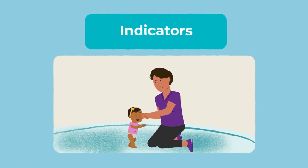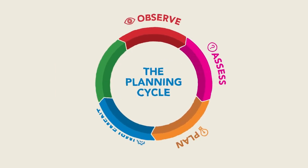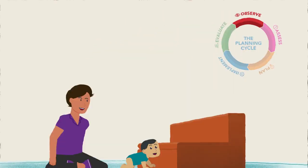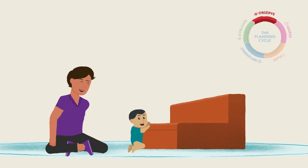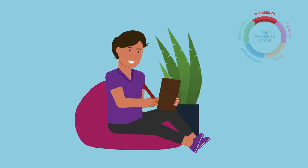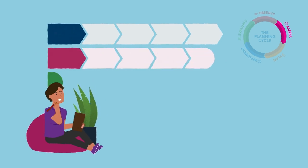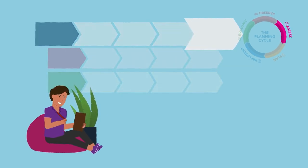Educators and teachers can use the learning trajectories to inform their practice. Let's look at how the learning trajectory for physical development can be used alongside the Early Years Learning Framework Version 2 Planning Cycle. An educator or teacher observes an infant crawling and beginning to pull themselves up on furniture. The educator or teacher refers to the learning trajectories to assess the learning and to identify the indicator that best describes the child's skill.